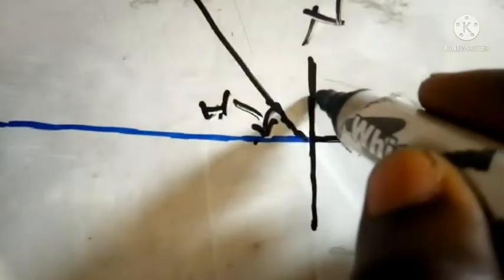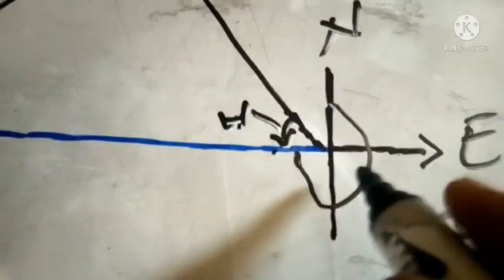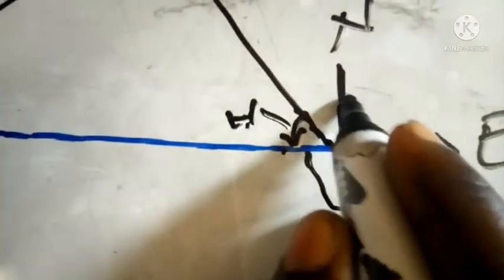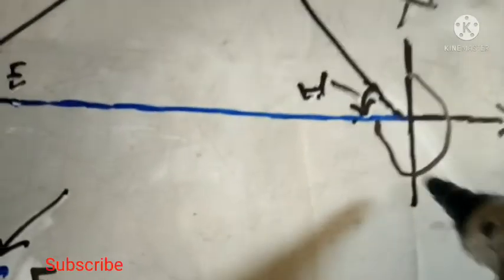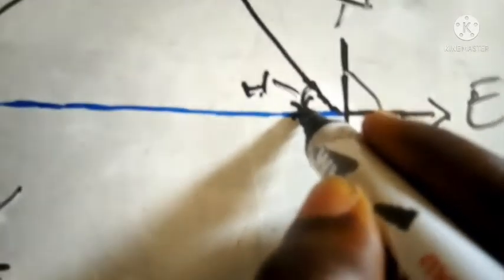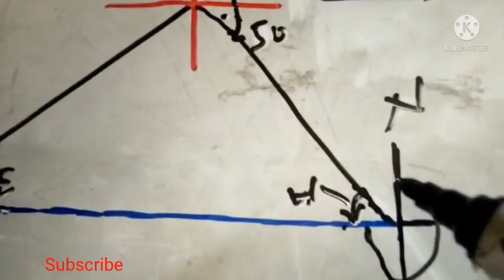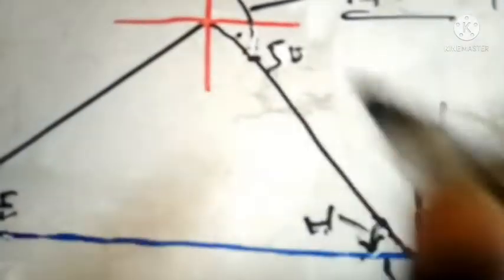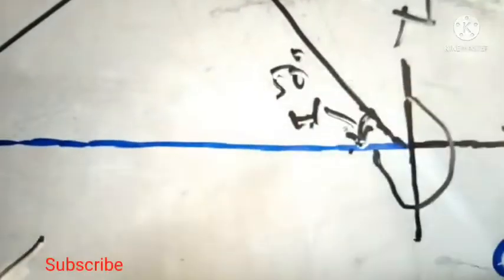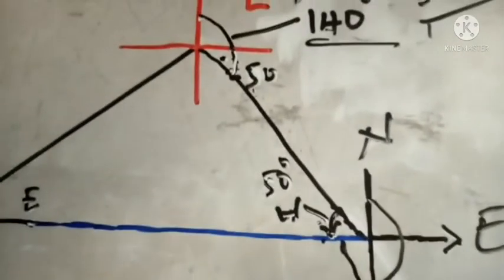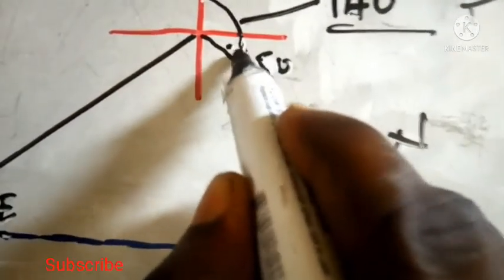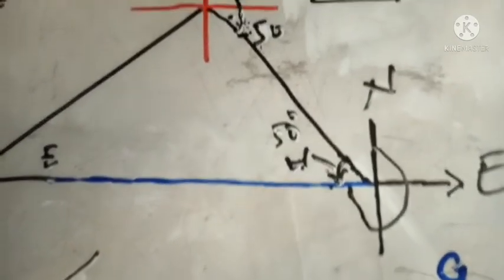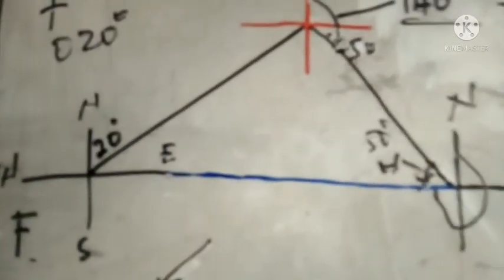The difference between a bearing and an angle is that bearings are taken from north, but this angle is measured from the horizontal line. Using alternate angles — if the angle at E below the east direction is 50°, then the alternate angle at G is also 50°. So the angle FGE is 50 degrees. That is how you solve bearing questions. Thank you for watching.